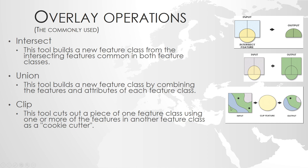Often you are in a situation where you can use one or the other. When doing analysis with GIS, the most common problem is that you get lost in your data, so keep it simple. Leave out those attributes you don't need. If you do not need the information from both layers, use a clip. If you do need information from both layers, then you should use an intersect.